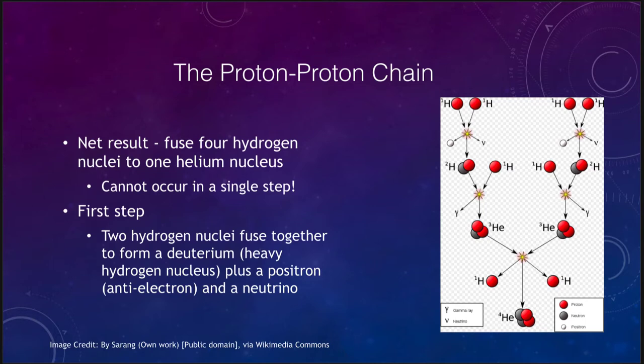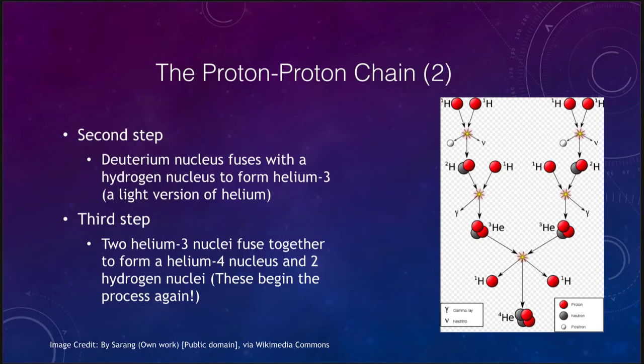In the next step, the deuterium nucleus merges with another hydrogen nucleus to form helium. But this is not the ordinary helium that we see. This is helium-3, a lighter version of helium with two protons and one neutron. Normal helium would have two protons and two neutrons. We're getting to helium but it's not the final product yet. This also gives off energy in the form of a gamma ray.